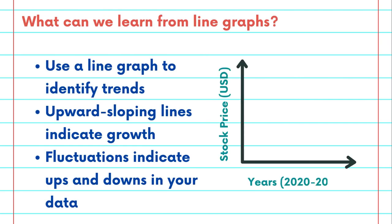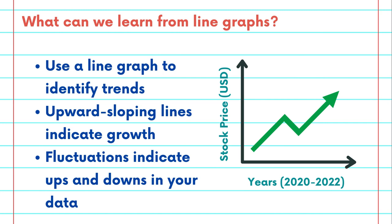What can we learn from a line graph? The most evident use of a line graph is to identify trends. An upward sloping line indicates growth, like a company's increasing revenue over several years. Line graphs also help us track fluctuations, showcasing ups and downs in data. This is particularly useful for understanding the volatility of stock prices or seasonality of sales.